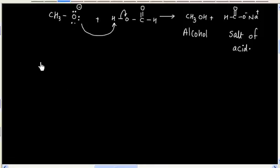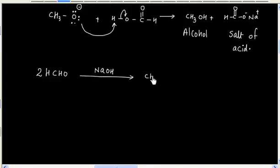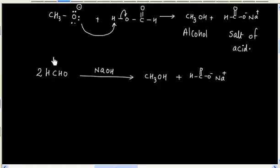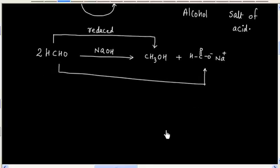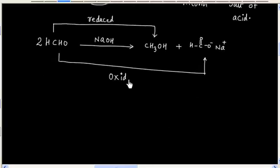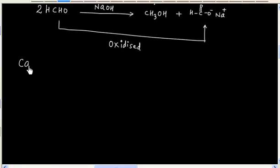If you see the overall reaction, we have two molecules of formaldehyde reacting with NaOH, and this gives methanol and sodium formate. So one molecule of aldehyde gets reduced and the other molecule of aldehyde gets oxidized. We can say the Cannizzaro reaction is a redox reaction.